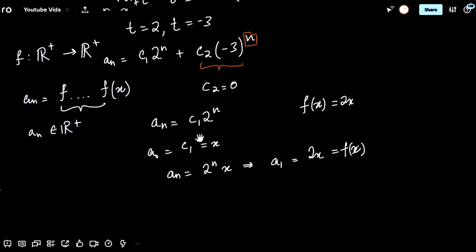That was Putnam 1988 A5, a pretty interesting functional equation trick if you ask me. I'm going to try this whenever I see compositions of functions and functional equations now.